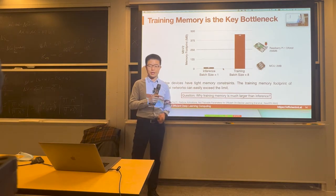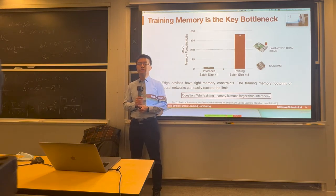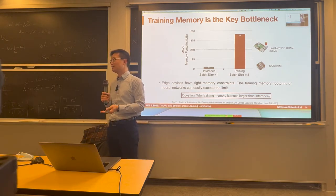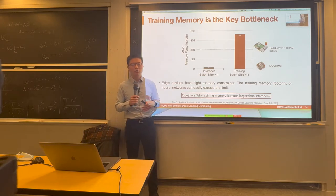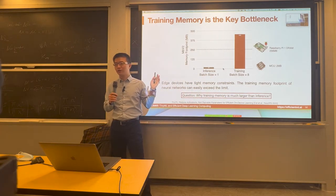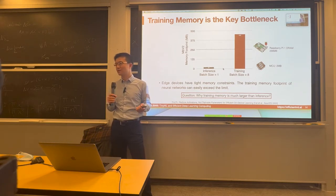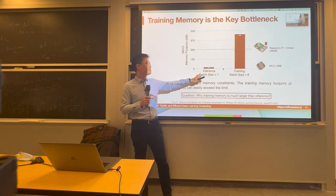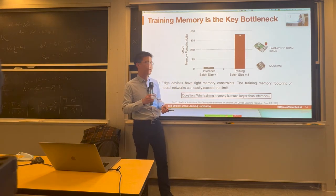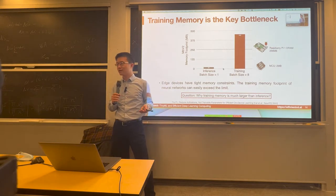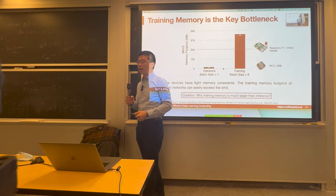What makes training so memory consuming? During forward propagation, you just need to compute one layer and throw it away. But in order to do training, you have to do backpropagation — you have to store all those intermediate activations. That's one point. The other factor is batch size. For inference, especially real-time inference, the batch size is usually only one, streamed from the sensors. For training, to make it easier to converge, we need a larger batch size like 8, 16, or even larger. That is another multiplier that makes training memory much larger.